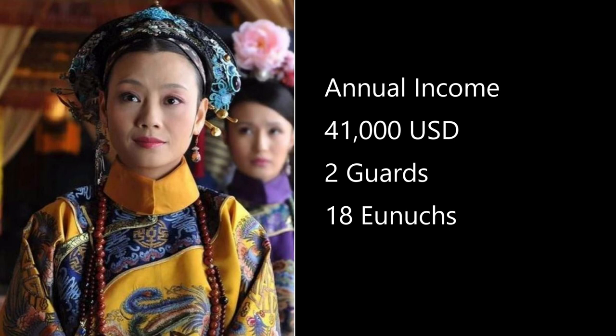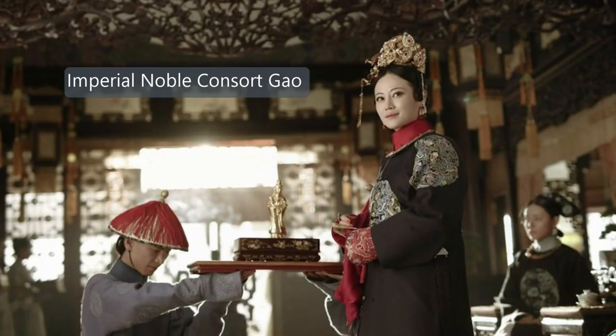She has two guards, 18 units cleaning her palace, and $41,000 as annual income. The picture shown here is imperial noble consort Gao, a Qianlong emperor noble consort. She was ill in 1745, and the Qianlong emperor promoted her to Hua Gui Phai position two days before she passed away — quite a sad story. And she didn't have any children.